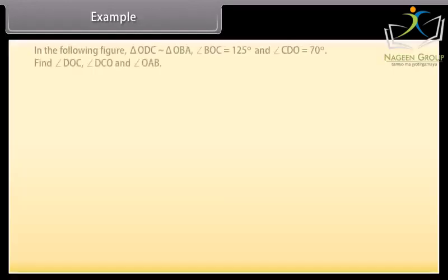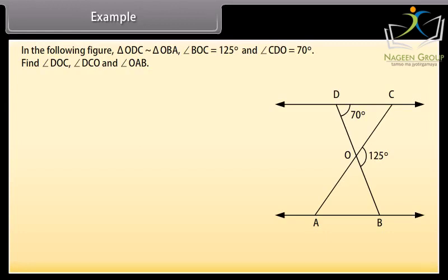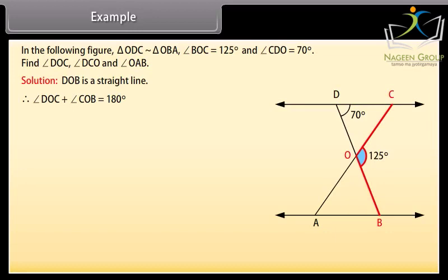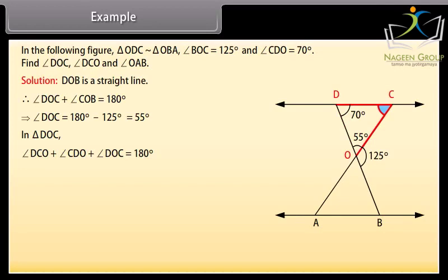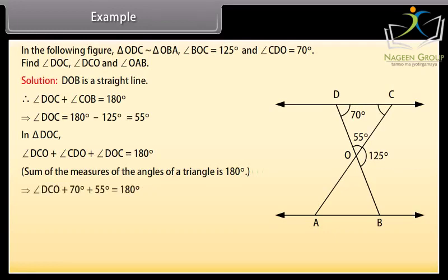Example: In the following figure, triangle ODC is similar to triangle OBA. Angle BOC equals 125 degrees and angle CDO equals 70 degrees. Find angle DOC, angle DCO, and angle OAB. Solution: DOB is a straight line, therefore angle DOC plus angle COB equals 180 degrees, which implies angle DOC equals 180 minus 125 equals 55 degrees.